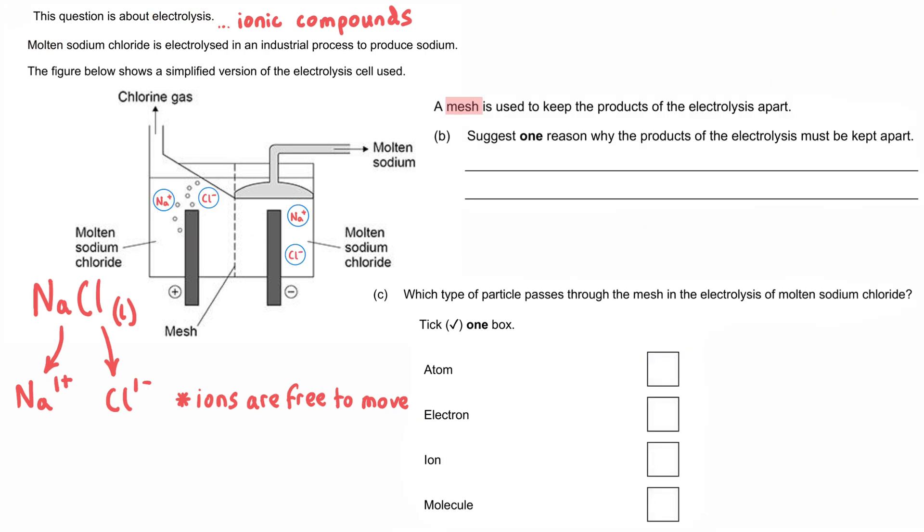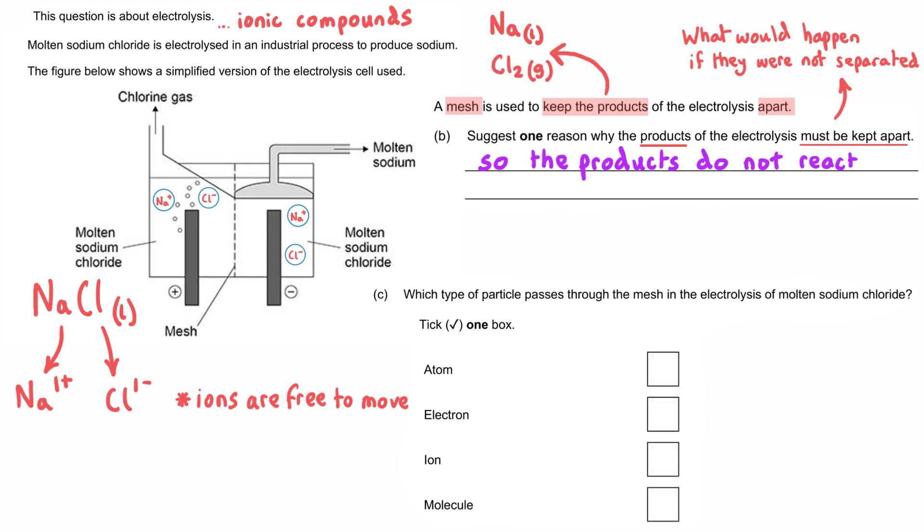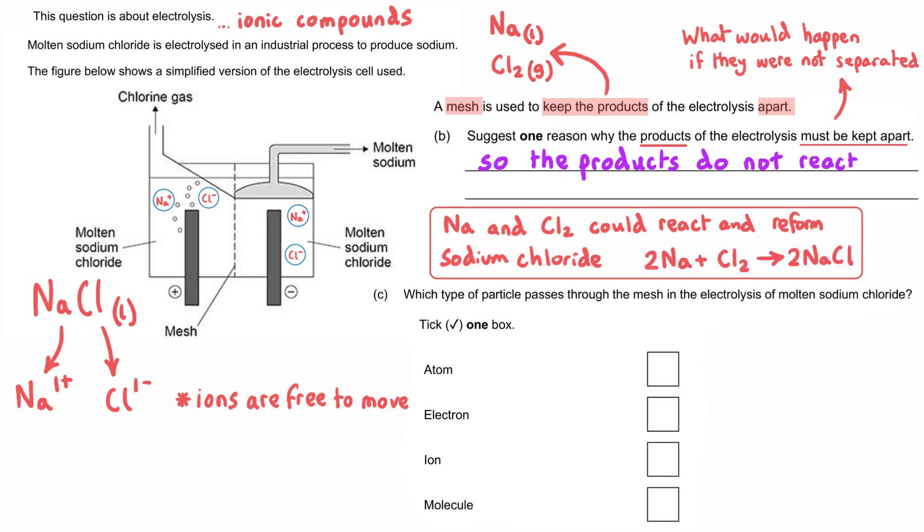A mesh is used to keep the products of the electrolysis apart. Suggest one reason why the products of electrolysis must be kept apart. The products of electrolysis are molten sodium, Na liquid, and chlorine gas, Cl2 gas. Chlorine is a diatomic molecule. When considering why these products must be kept apart, it's worth thinking about what would happen if they were not separated. Sodium and chlorine, if not separated, would actually probably react together and reform the sodium chloride: 2Na plus Cl2 would react and produce 2NaCl. We would be putting energy in to carry out this process, but this process would be reversing itself.